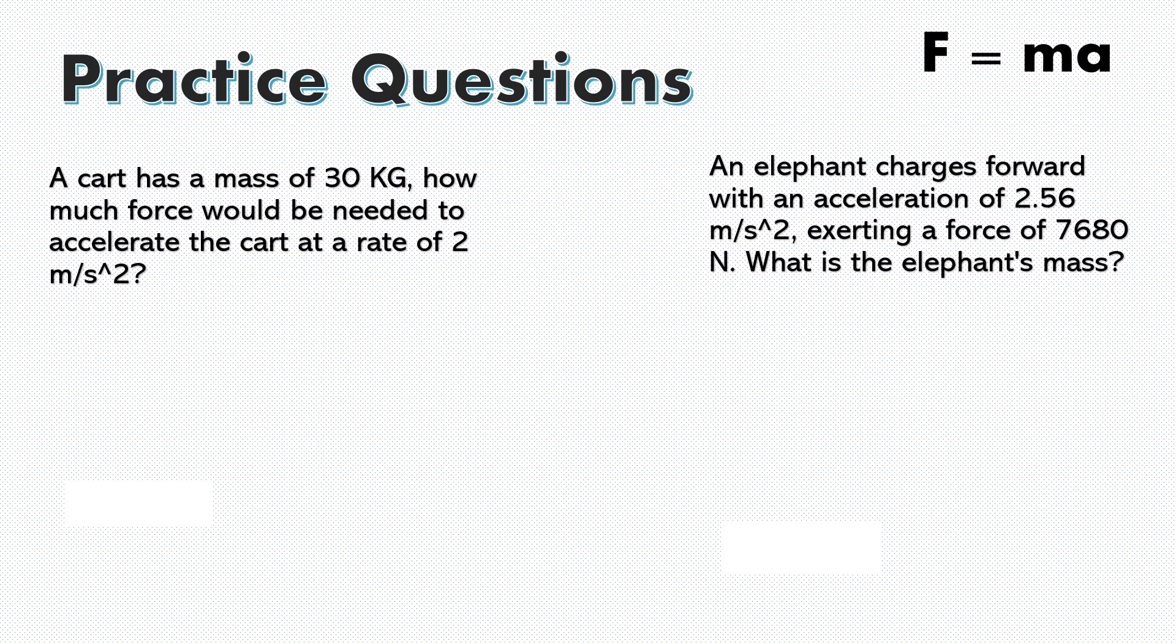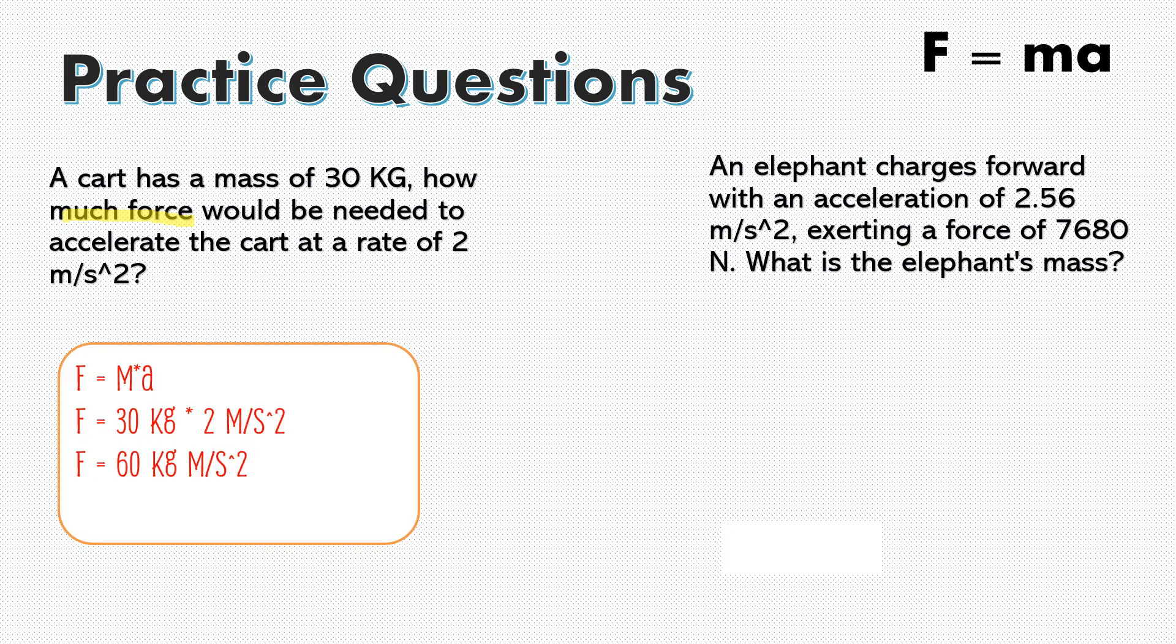So now that we have our understanding, we're going to start working on some practice problems. So the first problem says a cart has a mass of 30 kilograms. How much force? So they're asking for force. That's the first important thing. How much force would be needed to accelerate the cart at a rate of two meters per second squared. So we already have our mass and we have our acceleration. And we know that our formula is force is equal to mass times acceleration. The first step would be to write our formula. And then the second step would be to restructure our formula so that we can have the variable we're looking for isolated. In this case, that's already done for us because we're looking for force.